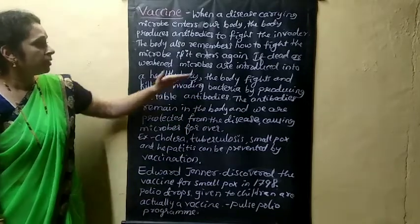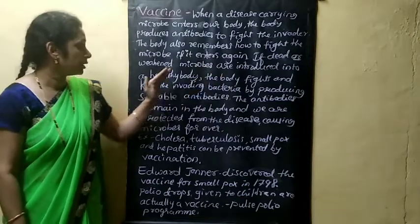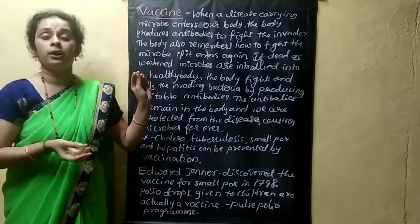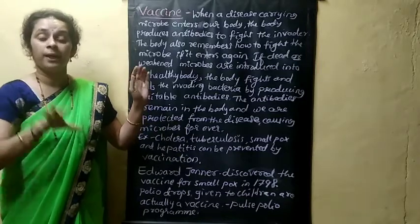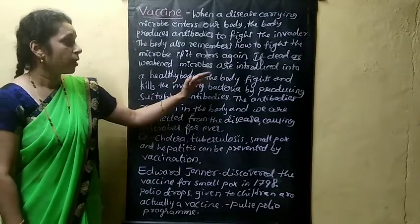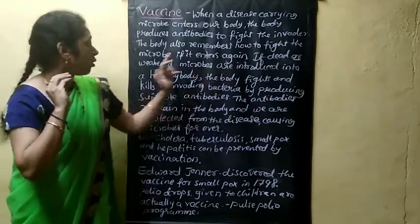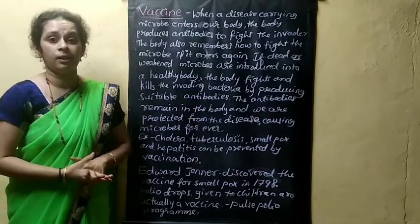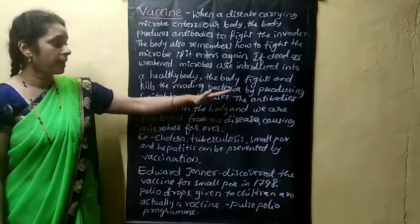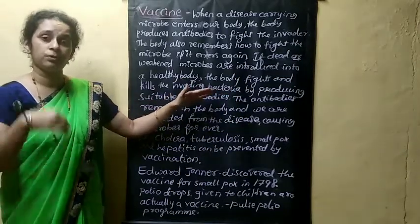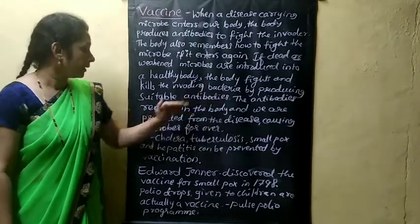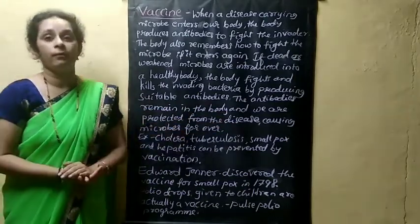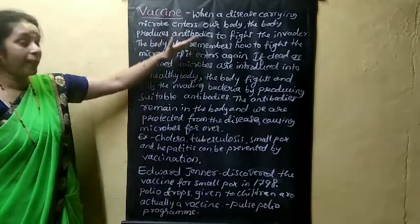To explain further: the microbes should be weakened or made dead in the laboratory, and those microbes are then introduced into the healthy body. When you introduce those dead or weakened microbes, the body fights and kills the invading bacteria by producing suitable antibodies. The antibodies remain in the body and we are protected from disease-causing microbes forever. This is how the vaccine works.